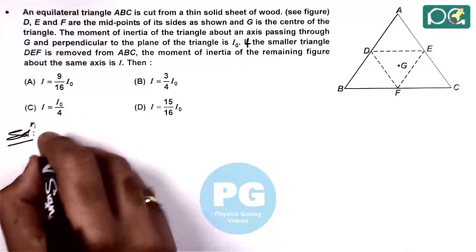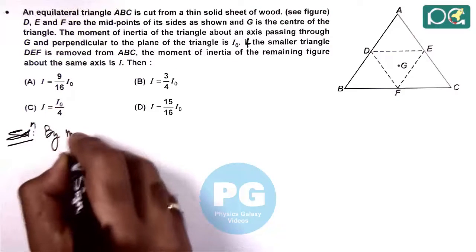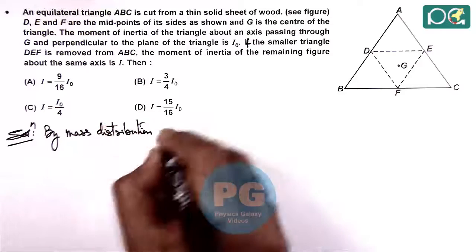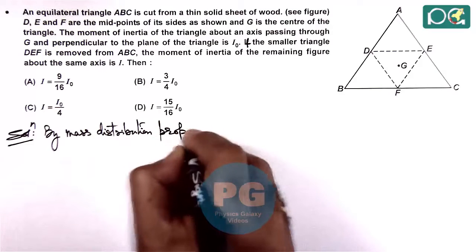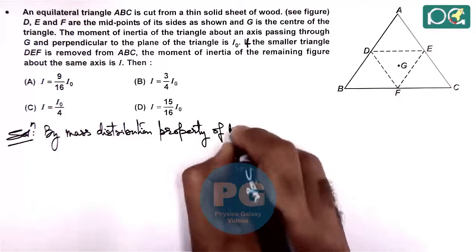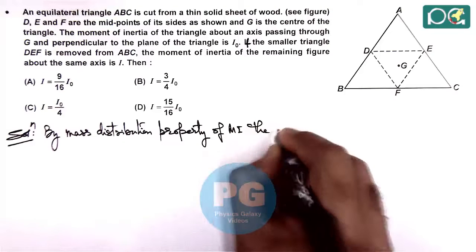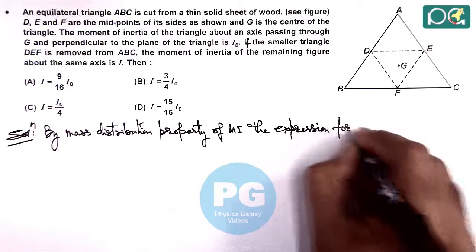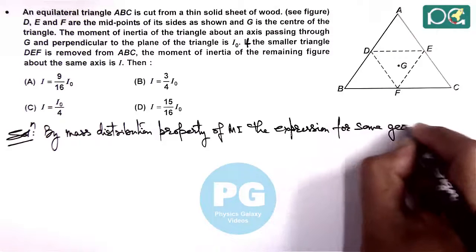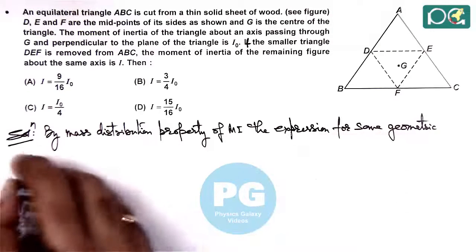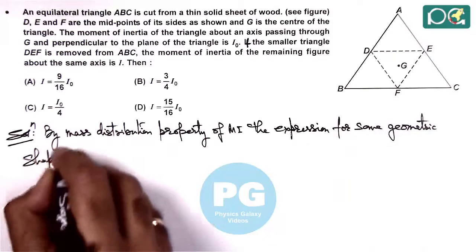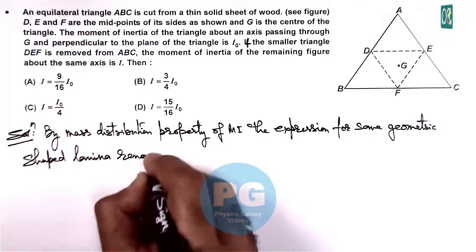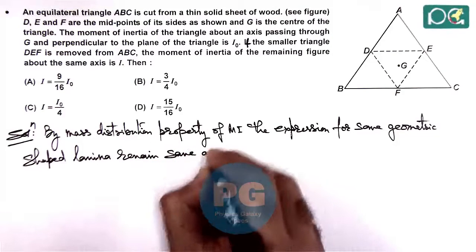And here we can write by mass distribution property of moment of inertia, the expression for same geometric shape lamina remains same always.